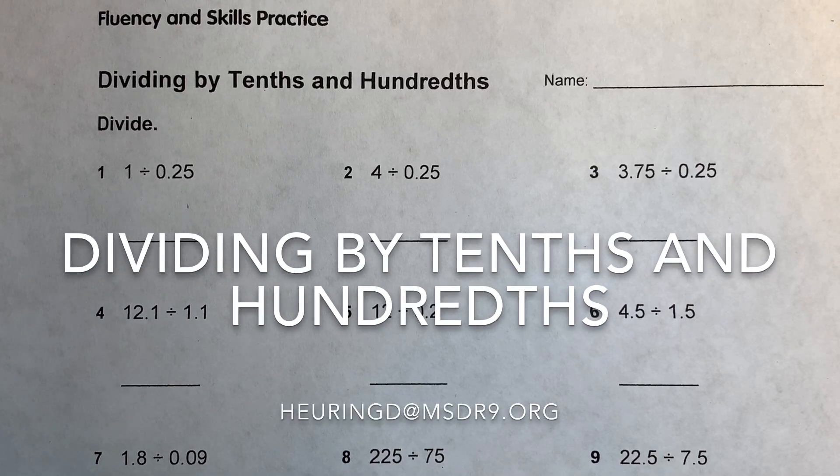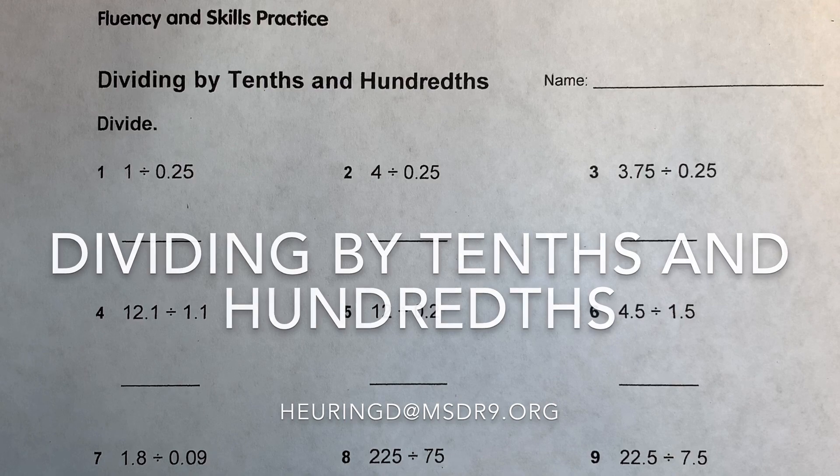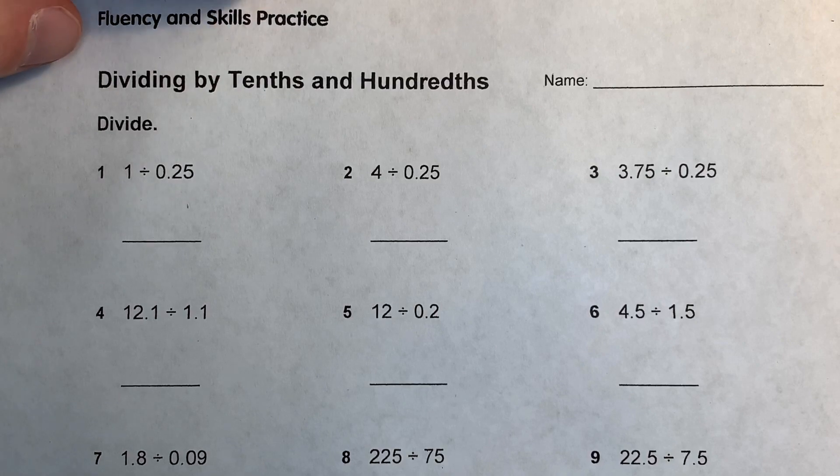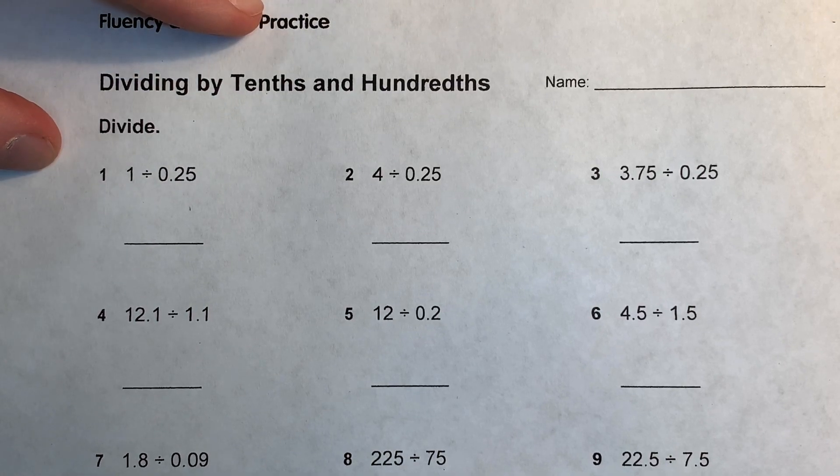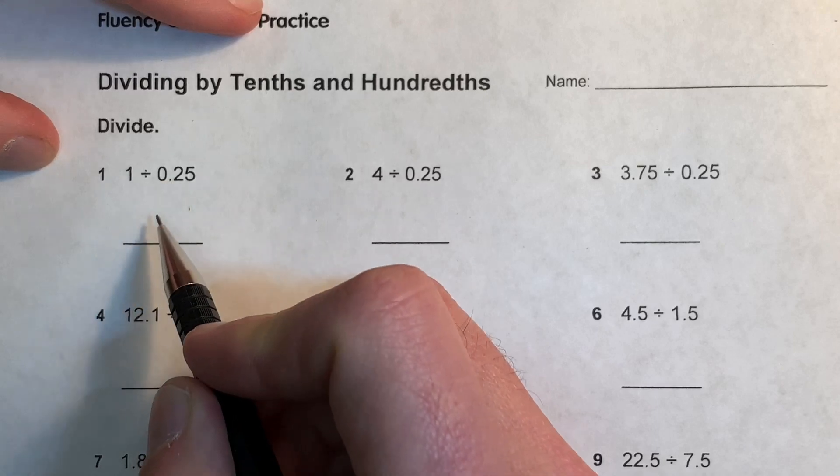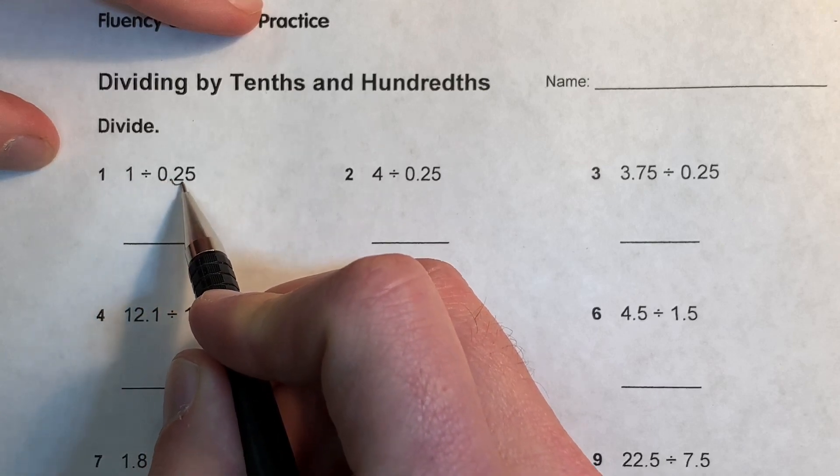So we're doing dividing of tenths and hundredths, and the easiest way I think to do it is to get the same value for each one. So the first one, we have whole numbers, and whatever we do to one side you have to do to the other. So we're going to move this two places to the right, or times it by a hundred.